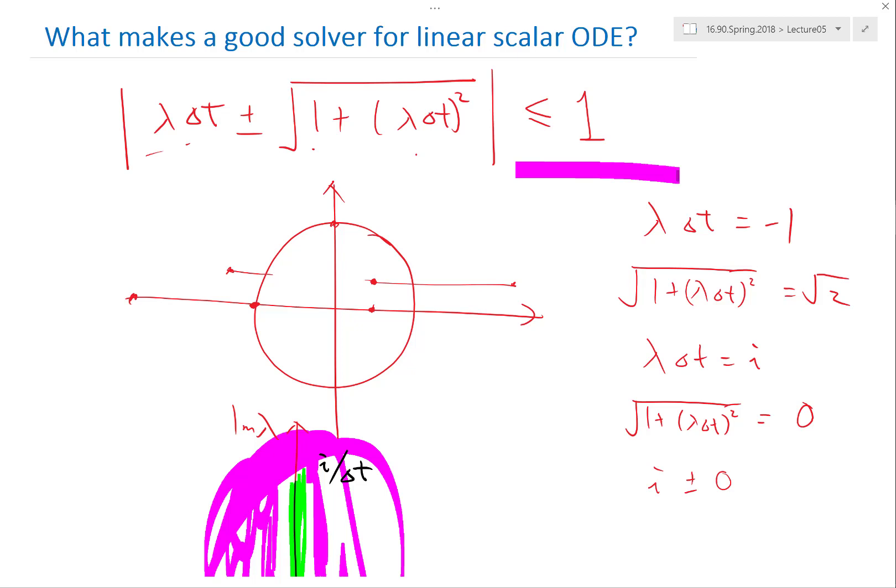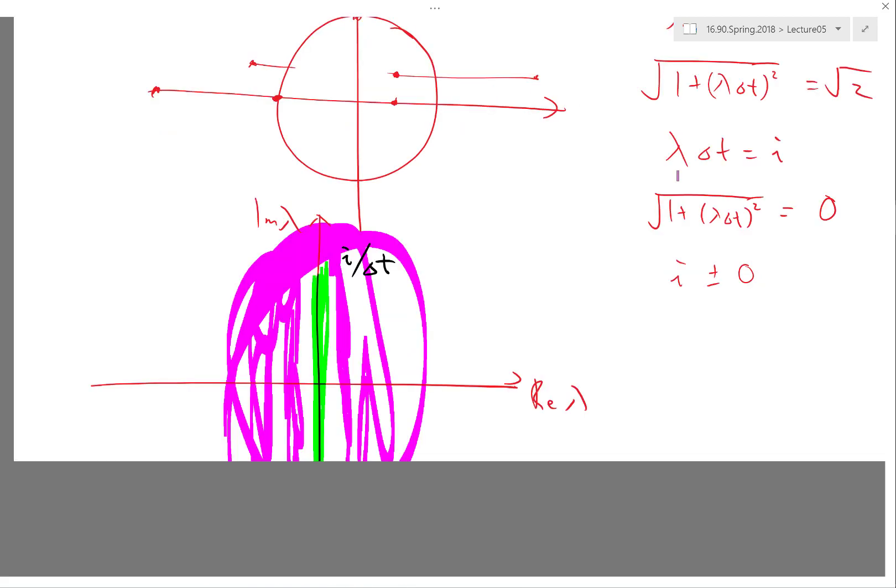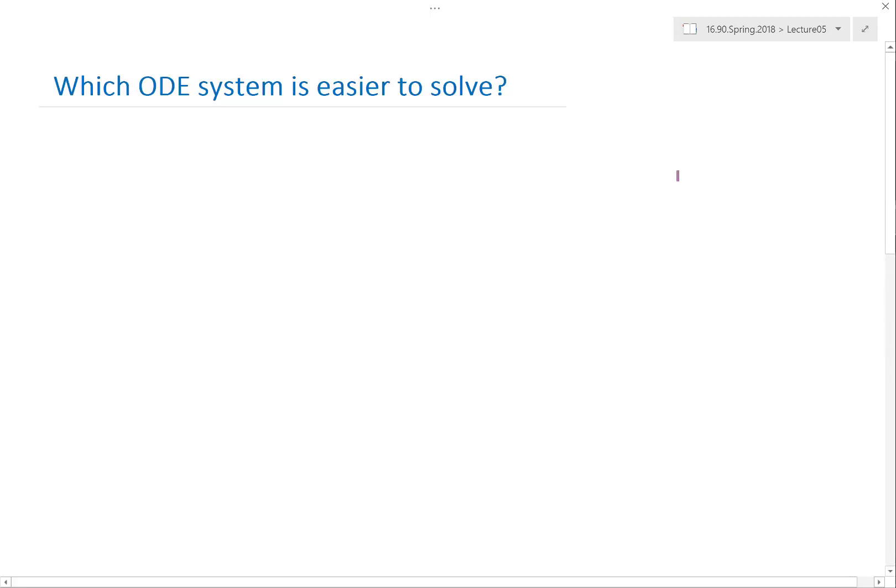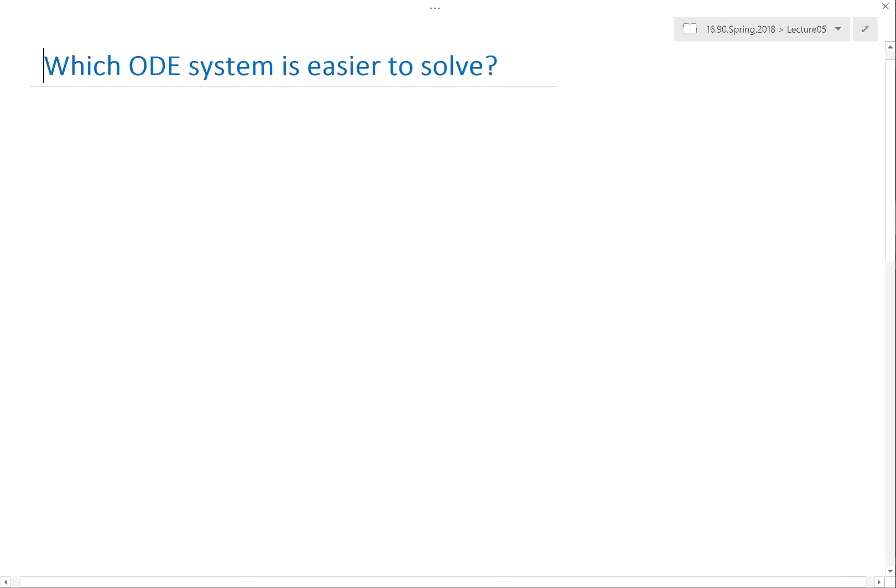For anything that has any type of dissipation, midpoint rule is highly not recommended. Now we are equipped with the concept that both forward Euler and midpoint rule have their own stability regions.